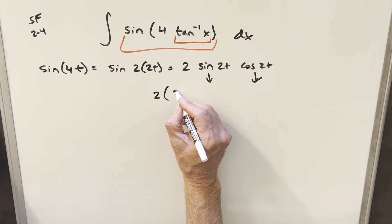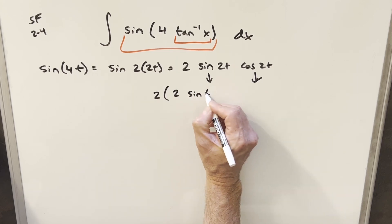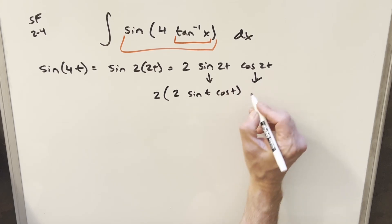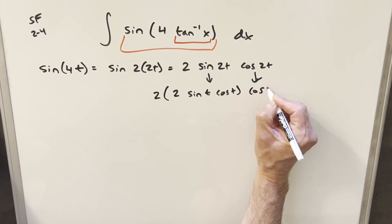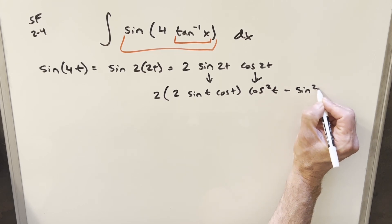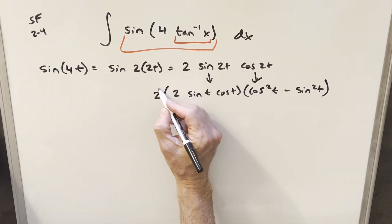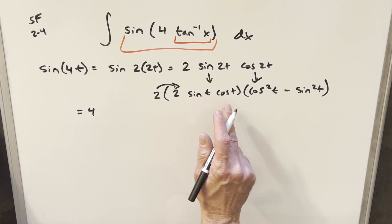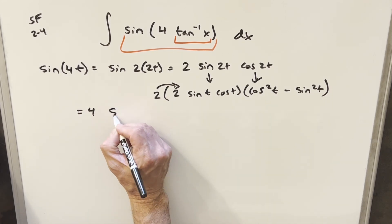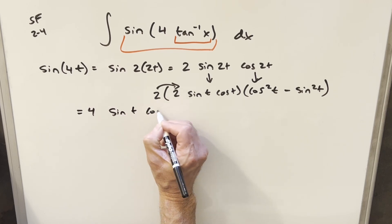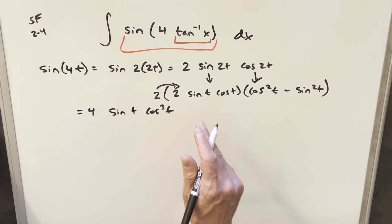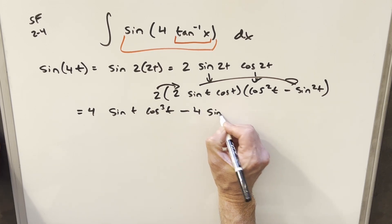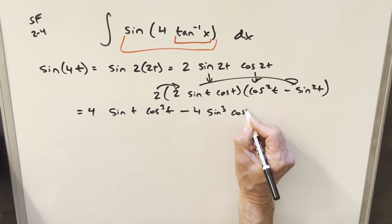We'll have 2, and for sine(2t) we get 2·sin(t)·cos(t). For the double angle formula for cosine, I'll use the version: cos²(t) − sin²(t). Multiplying that out, 2 times 2 is 4. Multiplying sine and cosine by cos²(t) gives us sine(t)·cos³(t). Then distributing to the other term gives us minus 4·sin³(t)·cos(t).